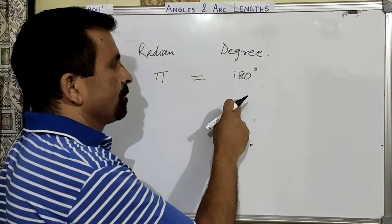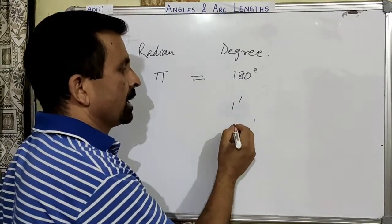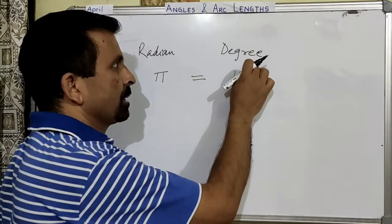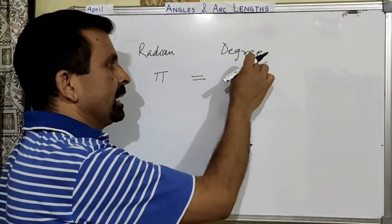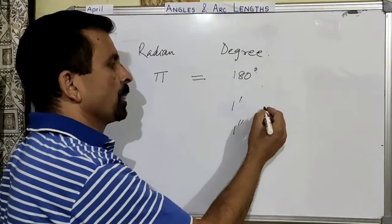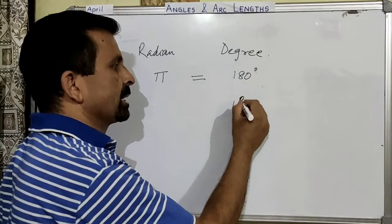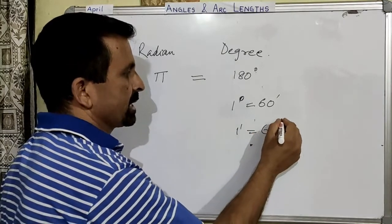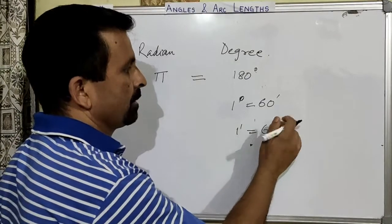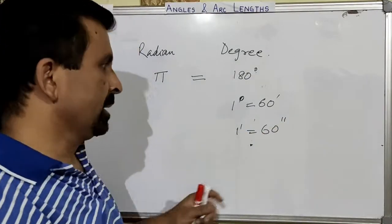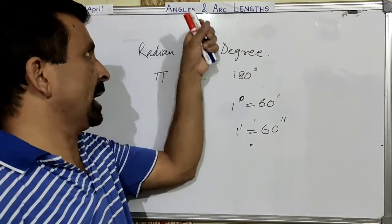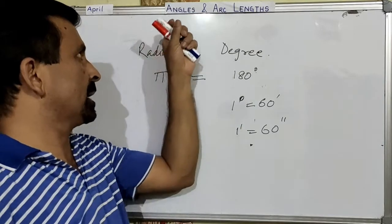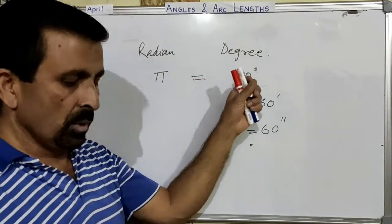The other units of degree are minutes and seconds. These are the other units of angle. Angle can be measured in degree. One degree is equal to 60 minutes, and one minute is equal to 60 seconds. The double dash notation is called seconds. So these are the smaller units of angle. The bigger unit is degree, and the relation between radian and degree is π = 180 degrees.